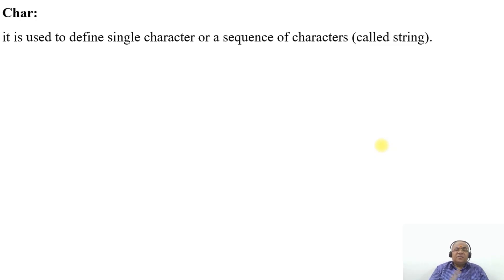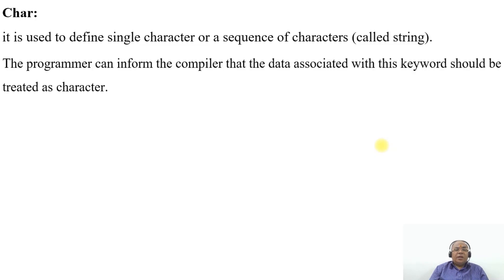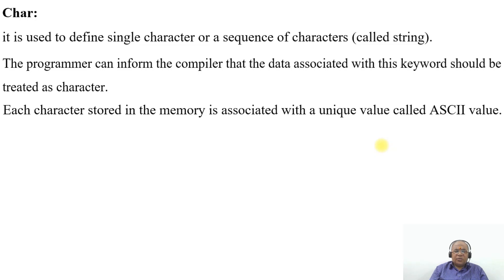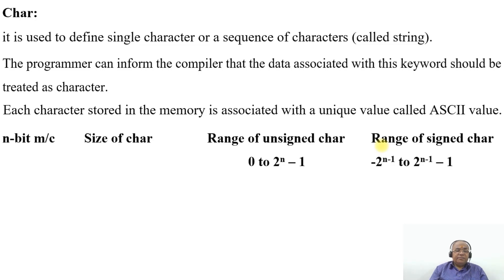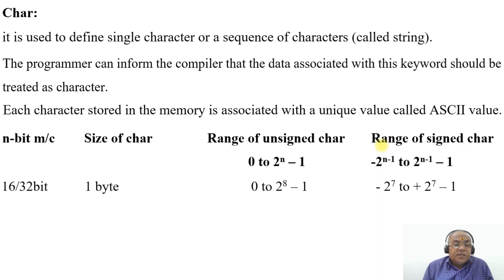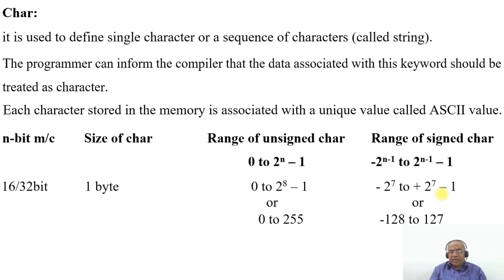The char data type is used for defining a single character or a sequence of characters which becomes a string. The programmer can inform the compiler that the data associated with this keyword should be treated as one character. Each character stored in memory is associated with a unique value called the ASCII value. For a 16 or 32-bit machine, the size of char is 1 byte, so unsigned char ranges from 0 to 255, and signed char ranges from minus 128 to 127.